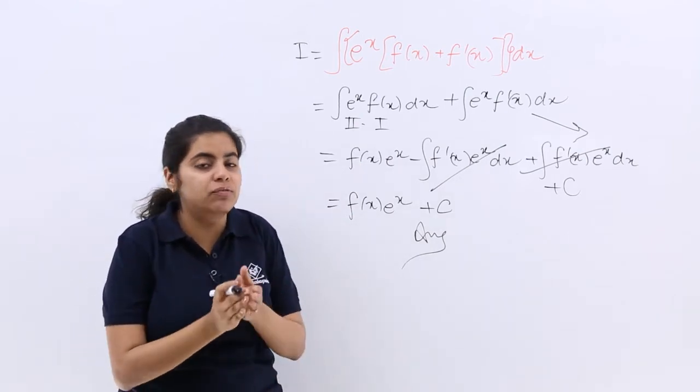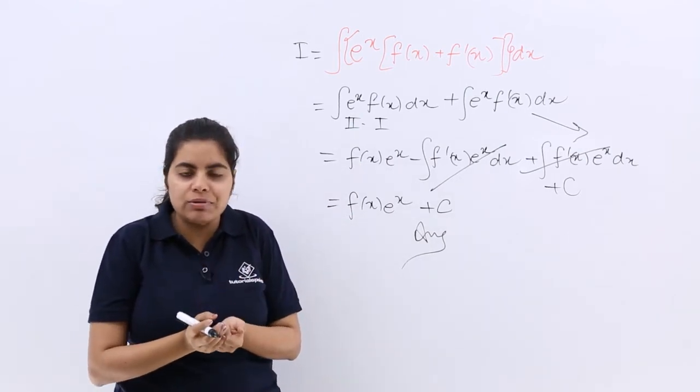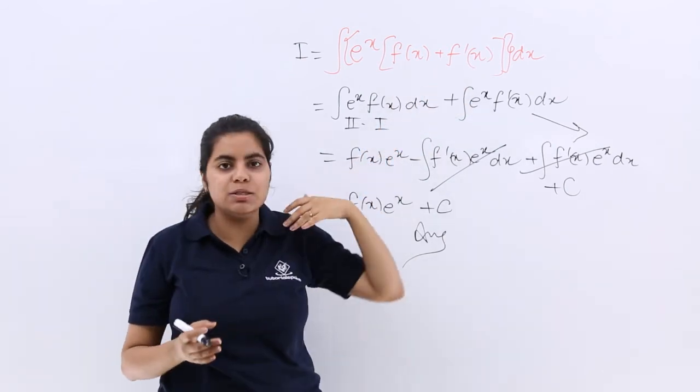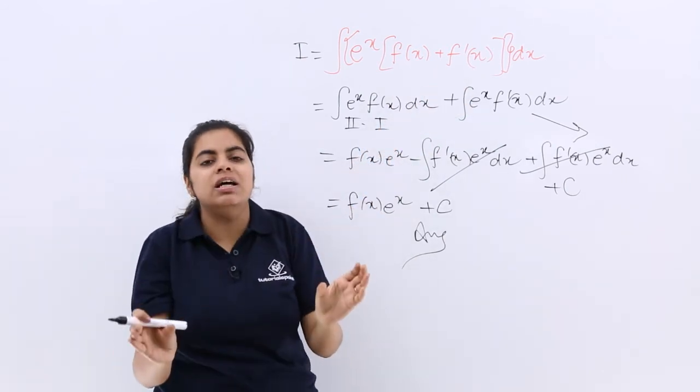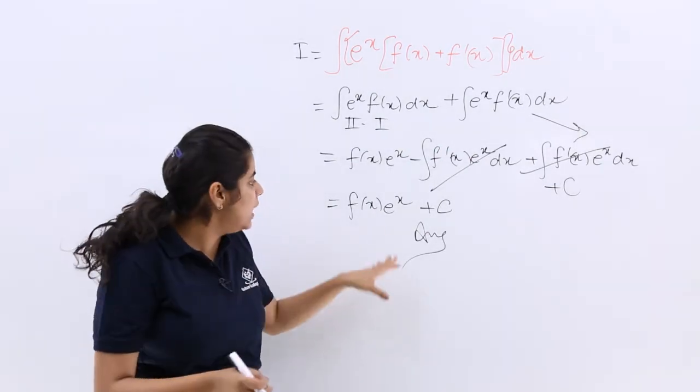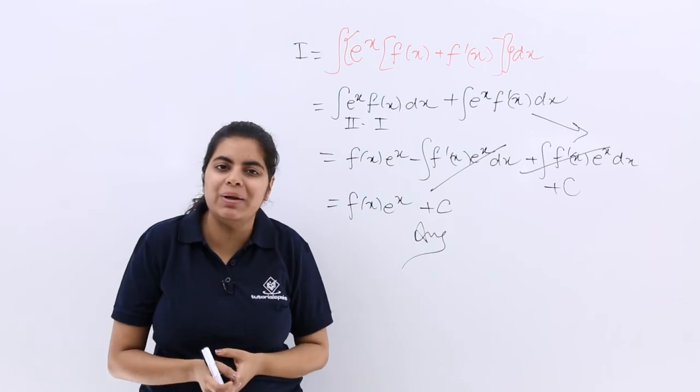So if you find a question where there is an exponential function and there is something which has both the function and its differentiation added up, the integration directly would be f(x)e^x plus C.